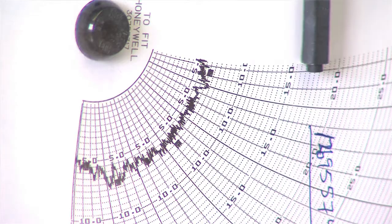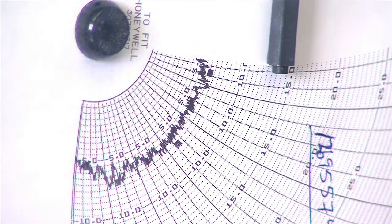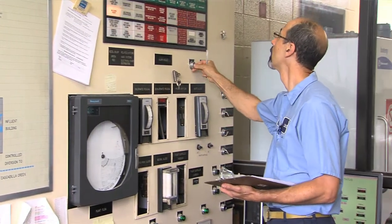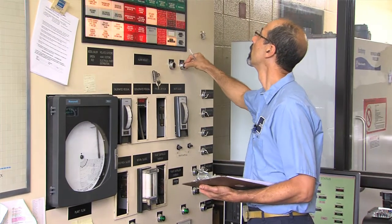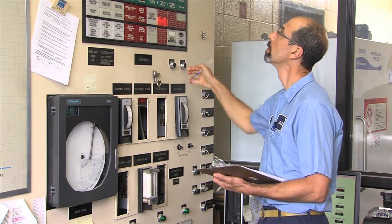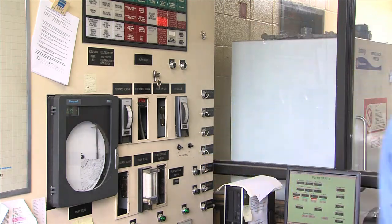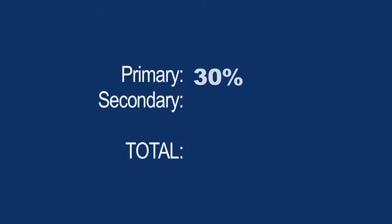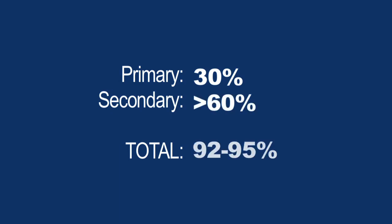The Federal Environmental Protection Agency has a standard of 85 percent removal after secondary treatment before the wastewater can be released to the environment. Our primary system removed about 30 percent, and our secondary system removed more than 60 percent. We're typically at 92 to 95 percent removal by the end of secondary treatment, at which point we could disinfect and release it to the lake.